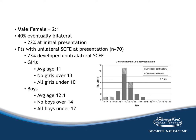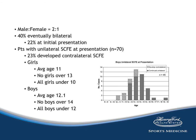Of the 70 kids who had unilateral disease at presentation, 23% went on to develop contralateral SCFE. In girls, the average age at initial presentation of those who developed bilateral disease was 11 — girls over 13 at initial presentation developed no bilateral disease, while all girls under 10 went on to develop bilateral disease. Similarly, all boys over age 14 with unilateral disease continued with unilateral disease, while all boys under 12 went on to develop bilateral SCFE. The bottom line: the younger you are at initial presentation, the more likely you are to eventually develop bilateral disease.